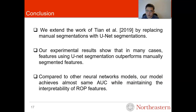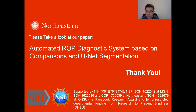In conclusion, we extend our previous work by replacing manual segmentations with U-Net segmentations. Our experimental results show that in many cases, features using U-Net segmentation outperform manually segmented features. Compared to other neural network models, our model achieves almost the same AUC while maintaining the interpretability of ROP features. Thanks for listening — please take a look at our paper on the automated ROP diagnostic system based on comparisons and U-Net segmentation.